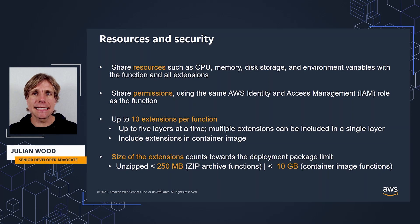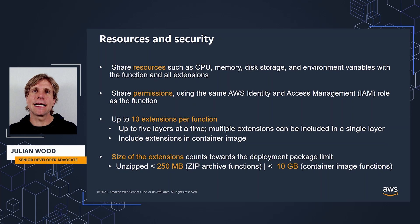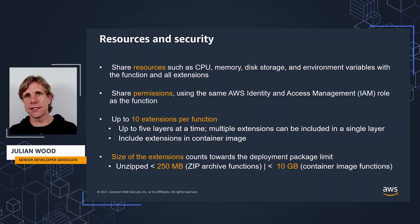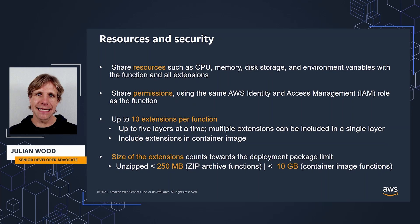You can include up to 10 extensions per function. These can be packaged in up to five Lambda layers for zip archive functions, and you can package multiple extensions in a single layer. For container image functions, you build and include the extension files within the container image. The size of your function's extensions counts towards the deployment package size limit — for zip archive functions the total can't exceed 250 MB unzipped, while for container image functions this is much larger at 10 GB.